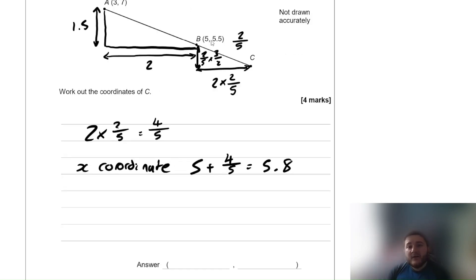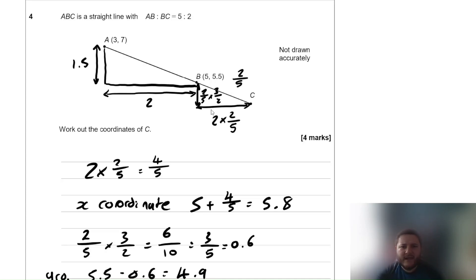And then B to C going down, well that is 2 fifths times 1.5. Multiply the fractions together, 2 times 3 is 6, 5 times 2 is 10, so 6 tenths or 3 fifths. So it's going to go down 3 fifths or 0.6. So we need to do 5.5 which is the y coordinate. It's going to go from 5.5 down 0.6 to 4.9. So that means the coordinate of C is 5.8 to 4.9. Quite an interesting question there. Just the key part is realizing that it must be 2 fifths of the difference between A and B, and then just a little bit of manipulation with some fraction multiplication.